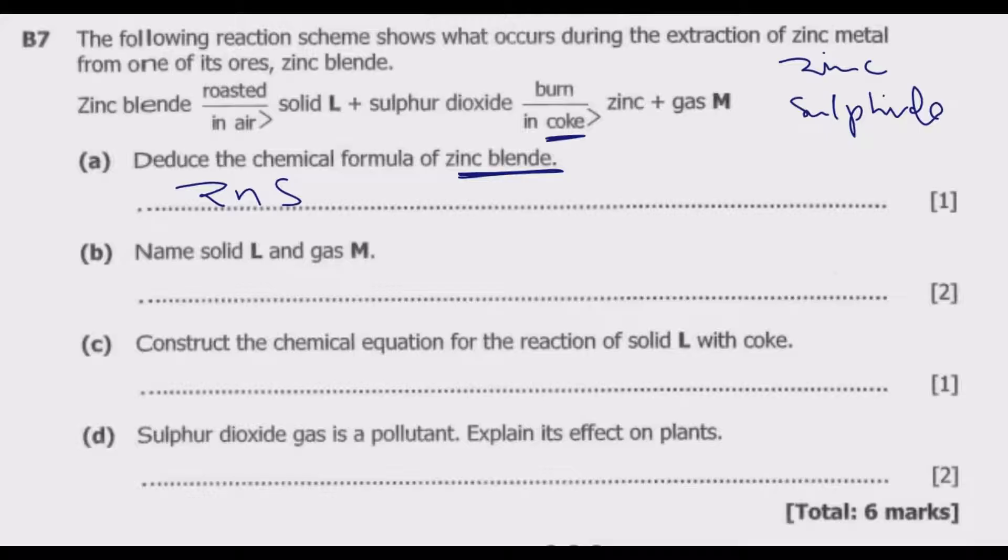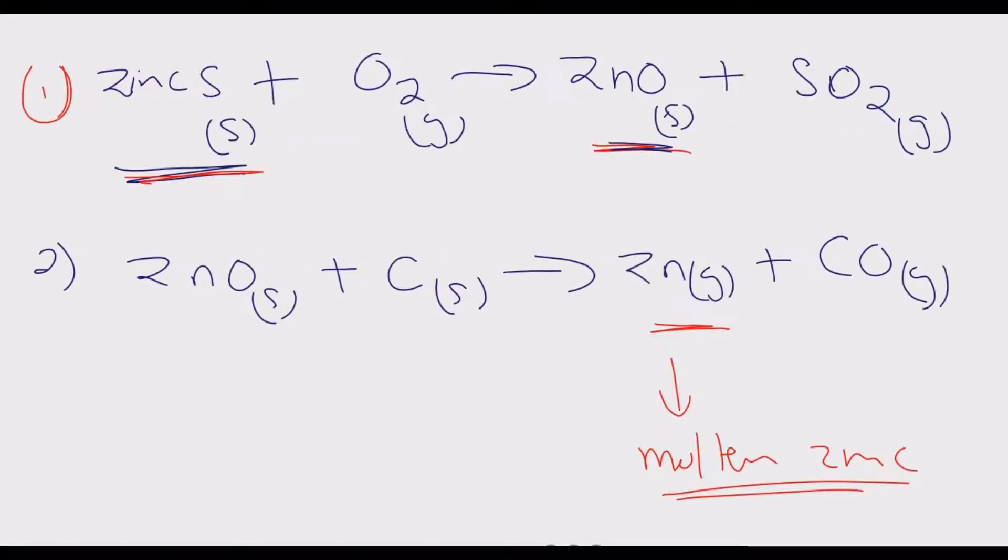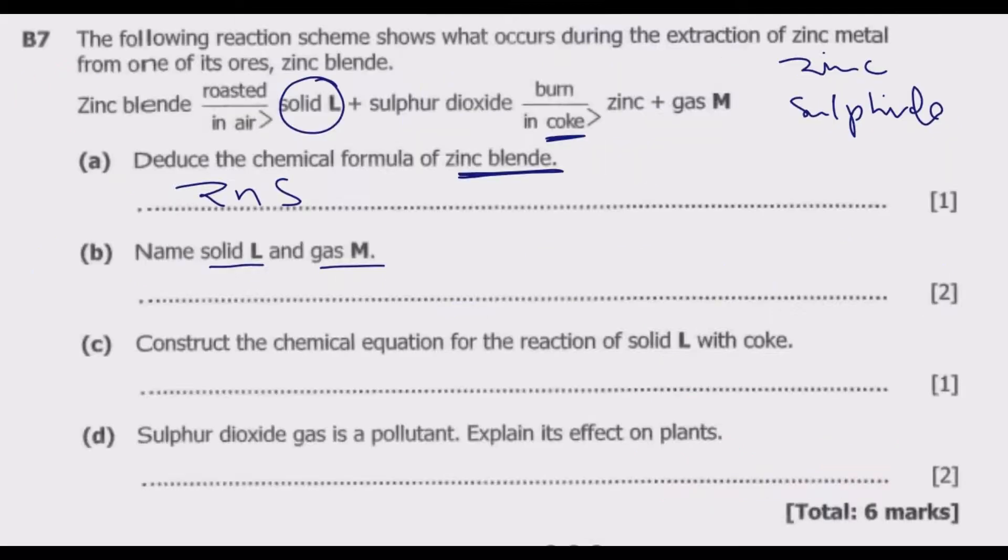Question B: name solid L and gas M. Because we've done the equation already, it's easier to know what this solid is and what this gas is. This solid is from the first equation, where we are burning zinc blende, which is zinc sulfide, in oxygen to give us this solid and sulfur dioxide. So what you notice is this is zinc oxide. We have zinc oxide as L.